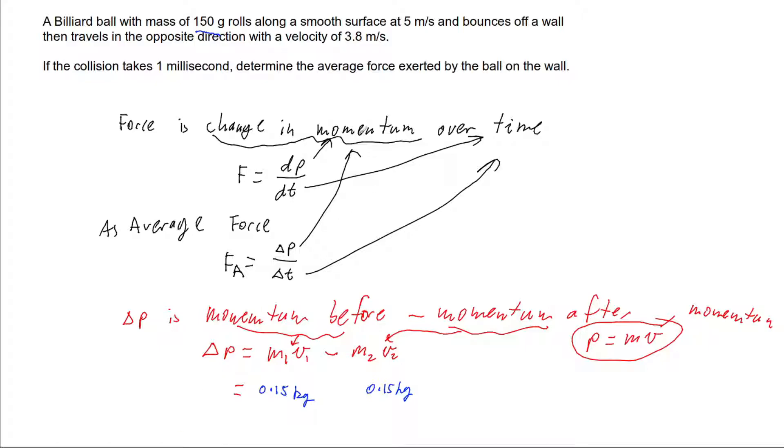So I'm going to have 0.15 kilograms for both of them because the ball isn't changing mass. And then before my bounce, I've got 5 meters per second. So I'm going to times by the velocity of 5 meters per second. So just fix up my notation there. And then after the collision, we've got a velocity of 3.8. So I'm going to times this one by 3.8 meters per second. And then our formula had a subtraction in the middle there.